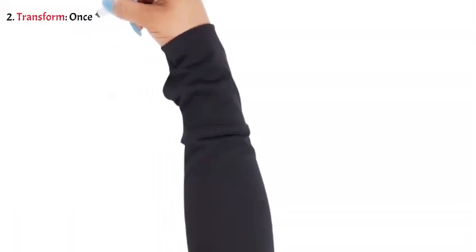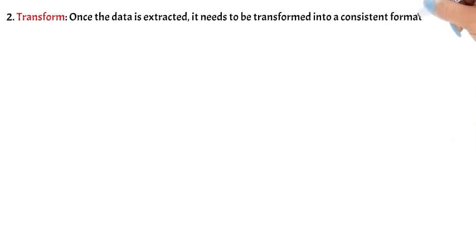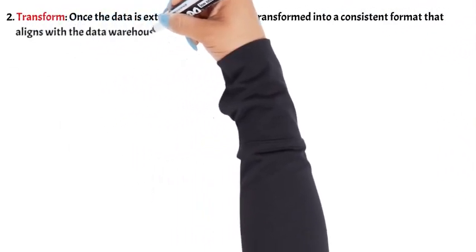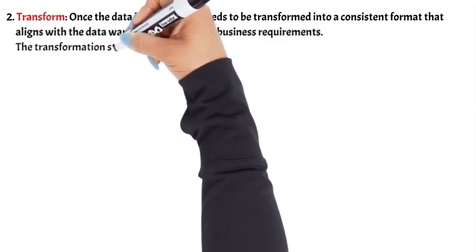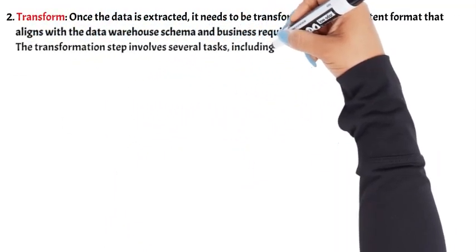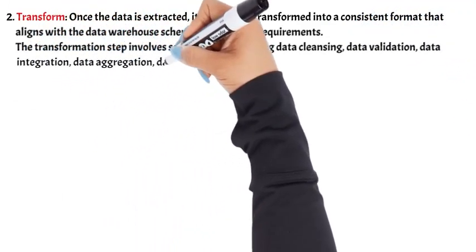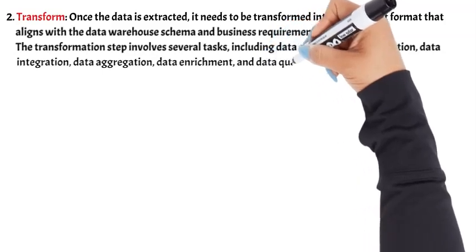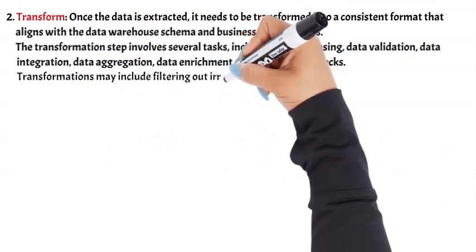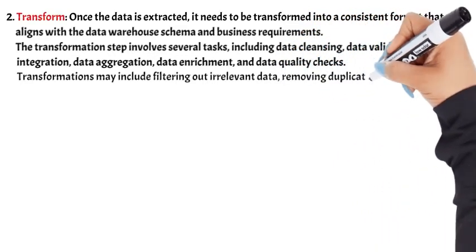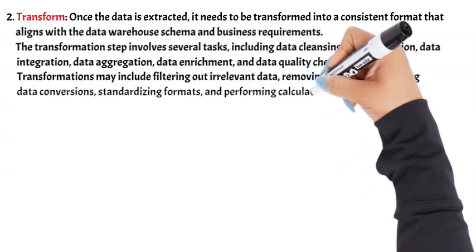Step 2 – Transform: Once the data is extracted, it needs to be transformed into a consistent format that aligns with the data warehouse schema and business requirements. The transformation step involves several tasks, including data cleansing, data validation, data integration, data aggregation, data enrichment, and data quality checks. Transformations may include filtering out irrelevant data, removing duplicates, applying data conversions, standardizing formats, and performing calculations.